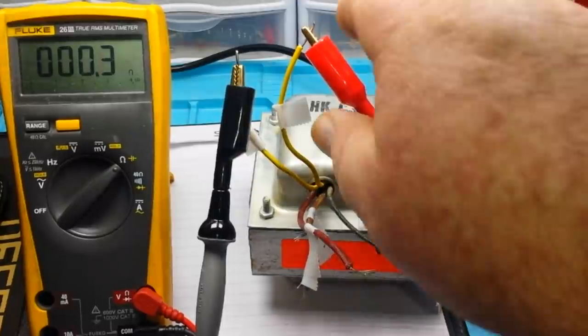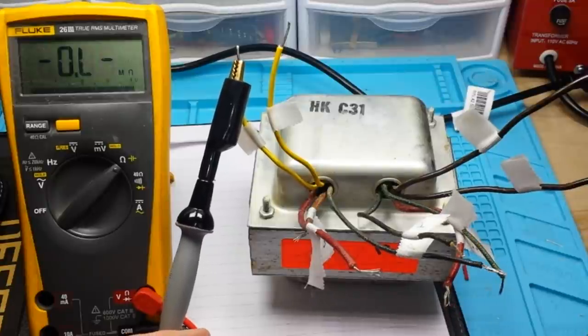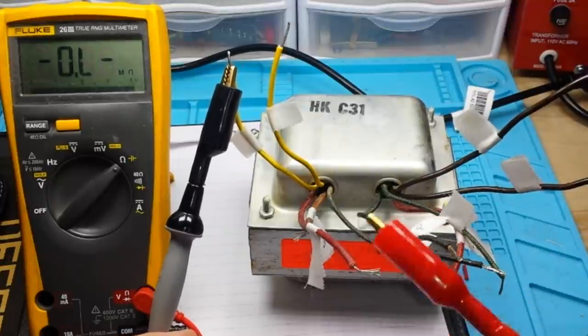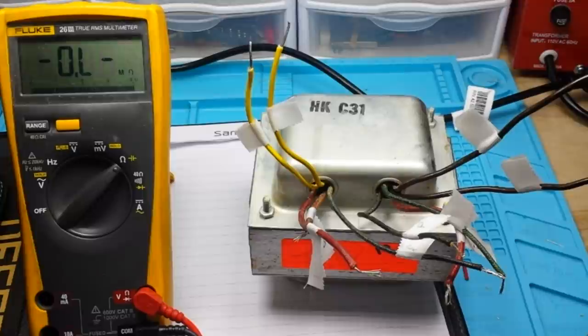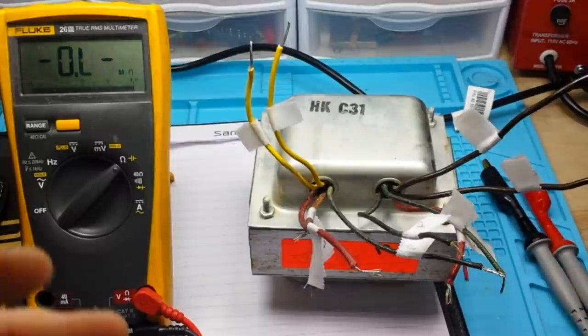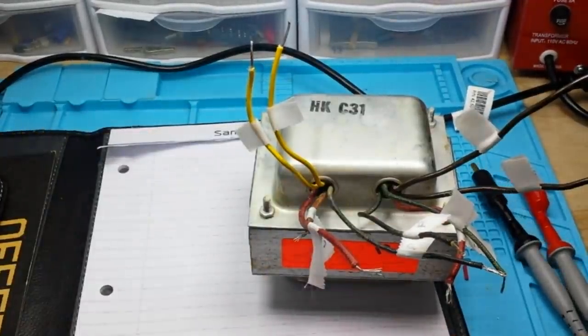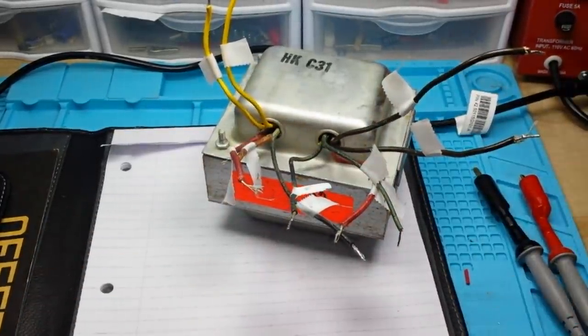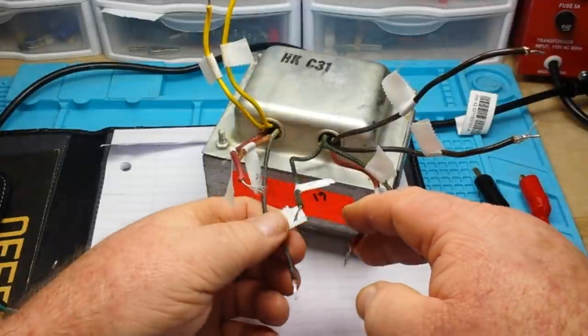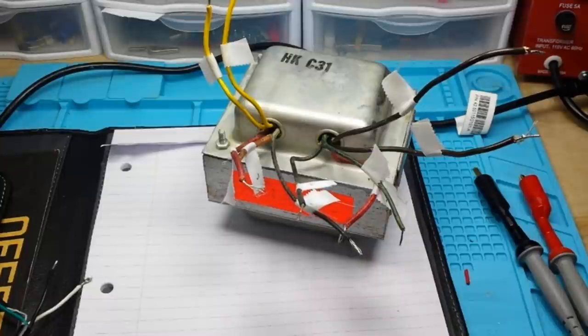Now one thing you can do to be absolutely careful is when you're checking windings, go through each individual set and make sure nothing else touches anything else. That's always a good thing. So now that we've got an idea of what's what, I'm going to attach a line cord to what I believe to be the primary, and we're going to use the variac back here in the corner to test that out.